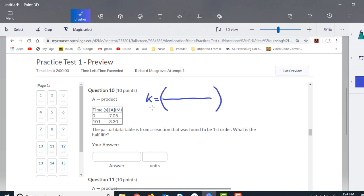Now it's going to be negative and it's going to be ln of 7.05 minus ln of 3.30. So that's the y values, and down the bottom it will be 0 minus 101, and that comes out to be 0.00751.